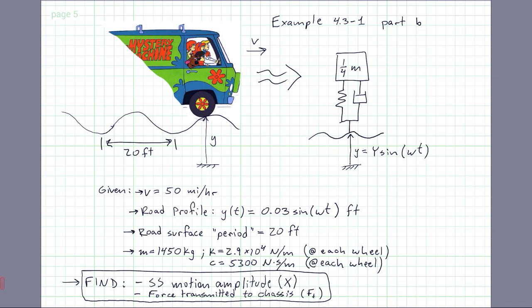Okay boys and girls, we have the second part of this problem that I started in class. This is a classic base excitation problem using car suspension, the quarter model. So we have here our gang in the Mystery Machine going at 50 miles an hour through this kind of wavy terrain. Now the road profile has got this kind of amplitude, this motion right here, so 0.03 sin omega t.